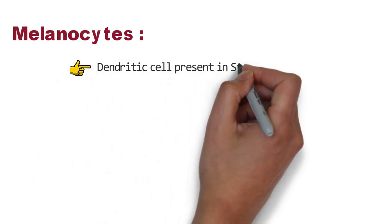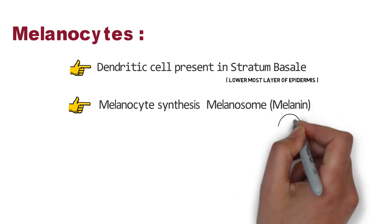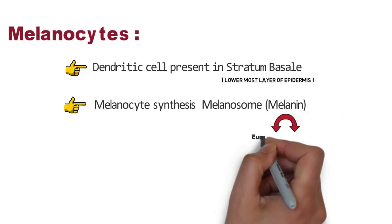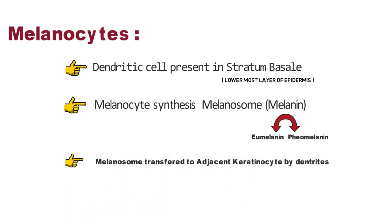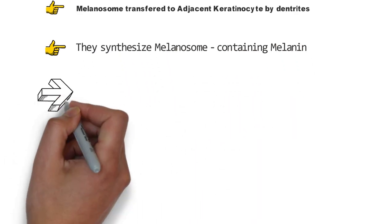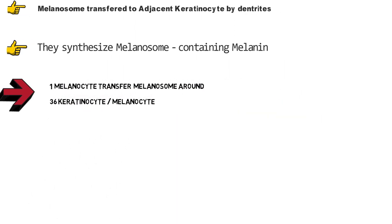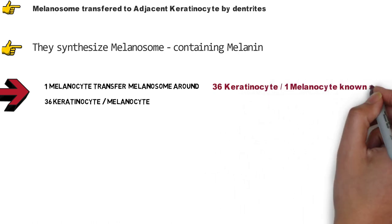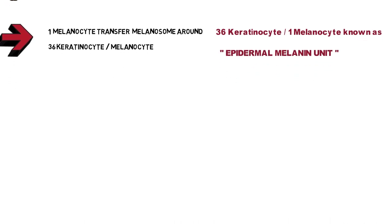Melanocytes are dendritic cells present in stratum basale, the lowermost layer of epidermis. Melanocytes synthesize melanosomes, which contain melanin — including eumelanin and pheomelanin. Melanosomes are transferred to adjacent keratinocytes by dendrites. A single melanocyte transfers melanosomes to around 36 keratinocytes, which is known as the epidermal melanin unit.